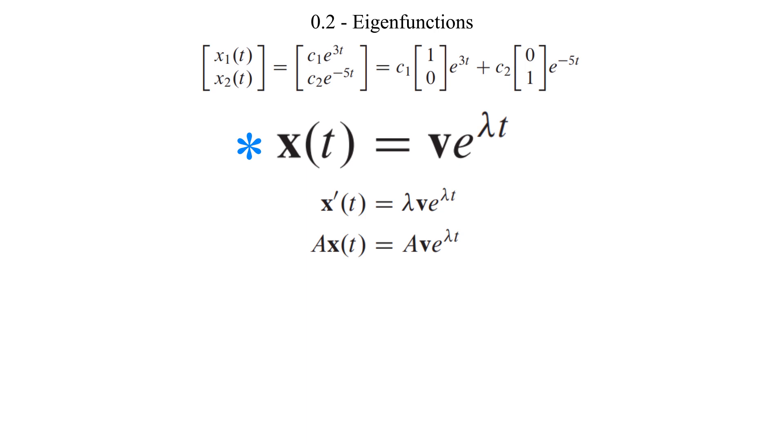which thus defines the seemingly arbitrary lambda scalar quantity as an old reliable eigenvalue, which also means that the fixed vector v is the corresponding eigenvector. This whole line of reasoning establishes that each eigenvalue-eigenvector pair effectively acts as a solution of the matrix differential equation x' = Ax. Such solutions are called eigenfunctions, which you will see in the coming examples are extremely important to solving systems of differential equations.